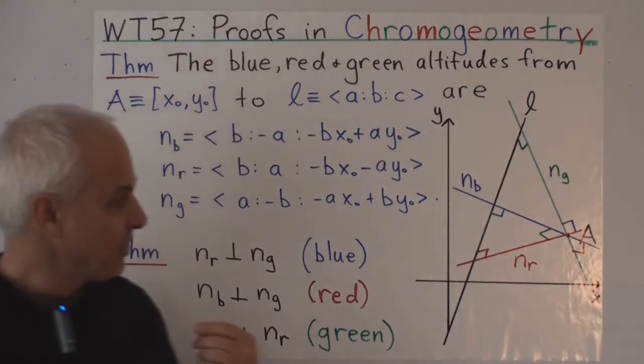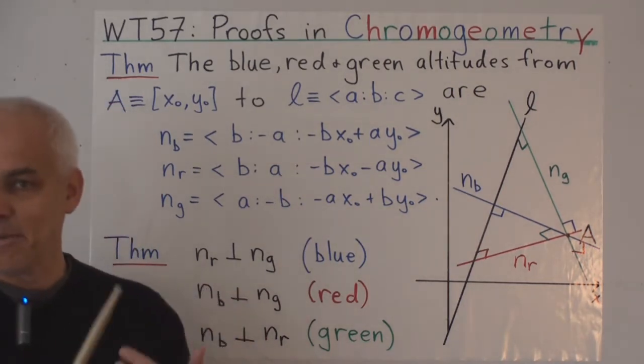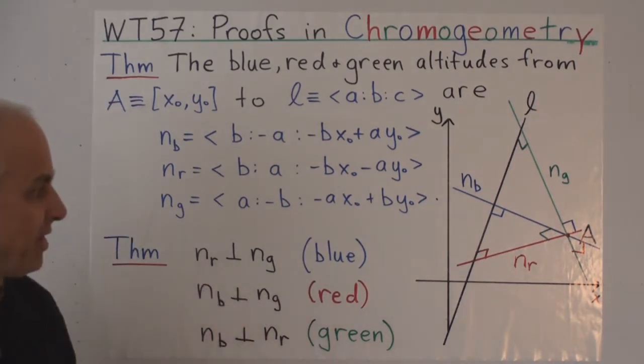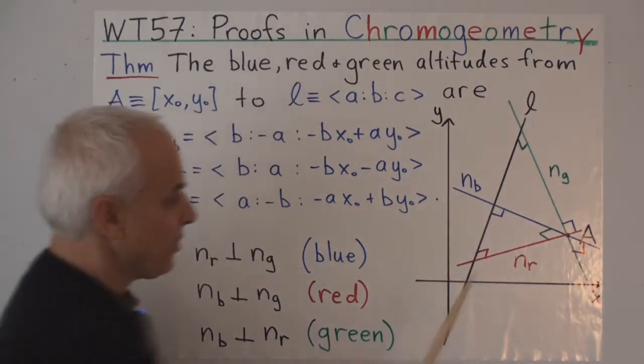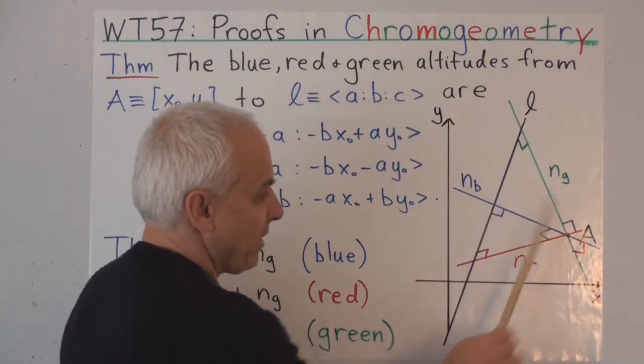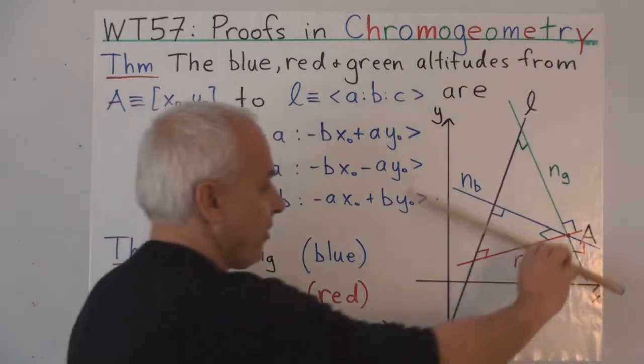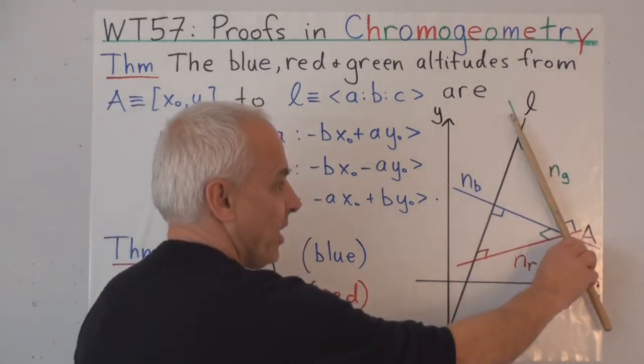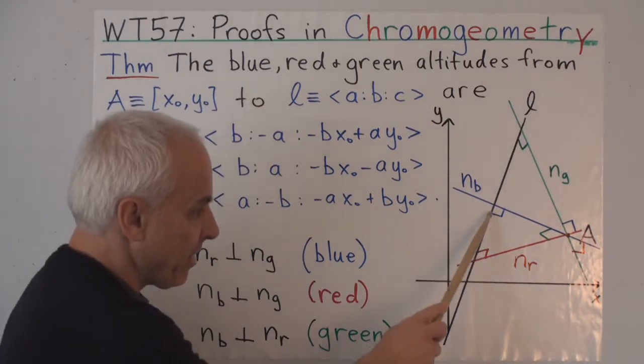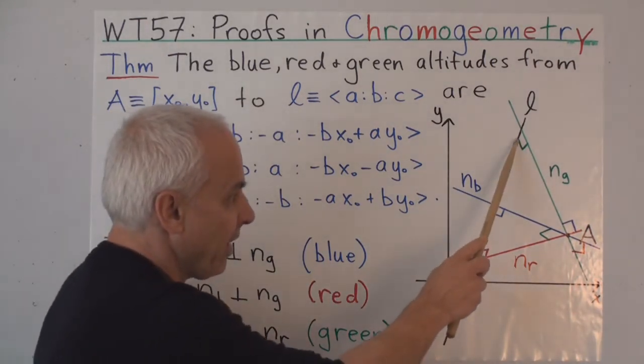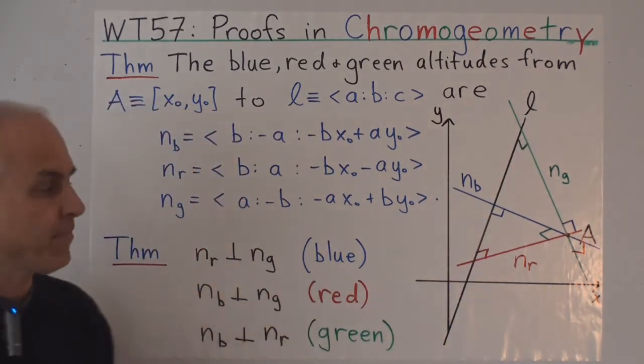Now, these three altitudes have an especially pleasant relationship with each other. You can see it in this example. There's our line L, our point A, the blue altitude, the red altitude, and the green altitude. Here we have red perpendicular there, blue perpendicularity there, green perpendicularity there.